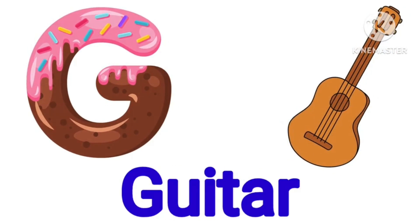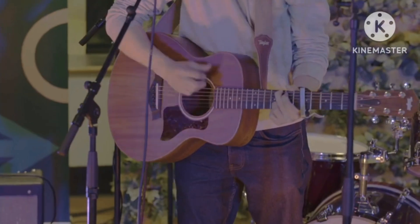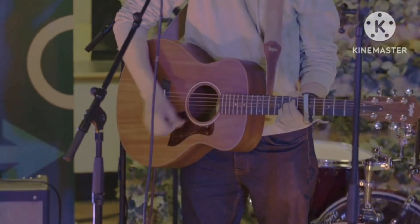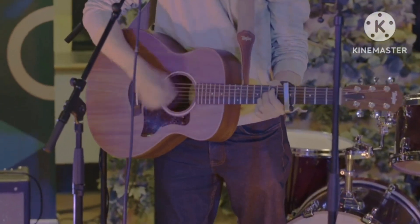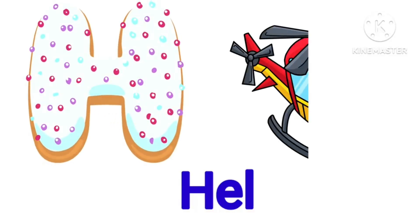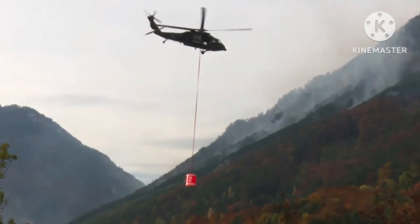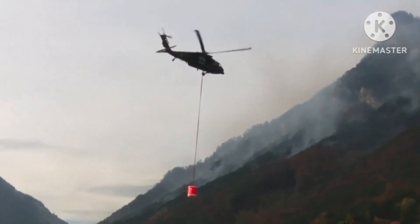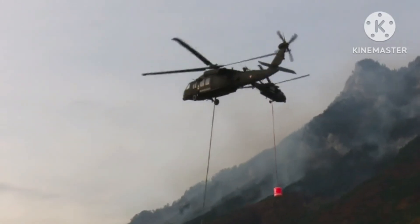G is for guitar. Come on, repeat after me again — G is for guitar. H is for helicopter. Let's say it once again — what is H for? H is for helicopter.